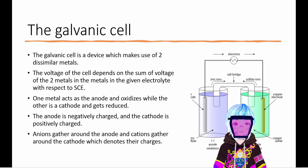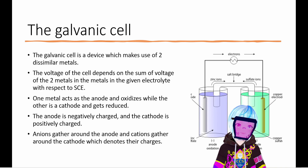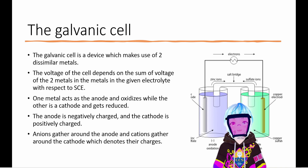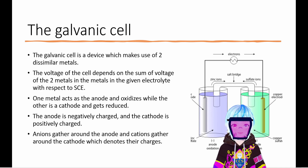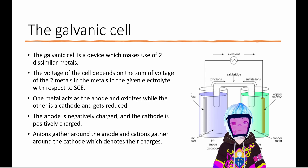The salt bridge allows observation of each half cell by separating apart the reactions occurring at each electrode, but still allowing for a steady flow of ions between them.